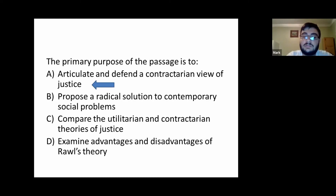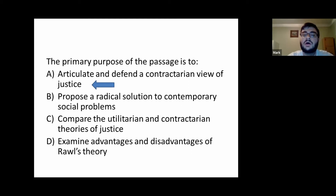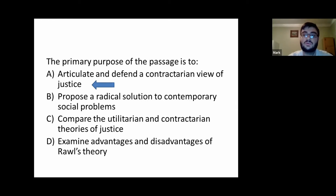And D: 'examine advantages and disadvantages of Rawls' theory.' Rawls' theory is a part of his passage, but it's a small part. Mostly he's talking about contractarians as a whole, and Rawls' theory is only a small part of that. He doesn't really talk about the disadvantages of Rawls' theory, only the advantages. So it wouldn't be D — it's not advantages and disadvantages — and D is more of a sub-point rather than a main idea.